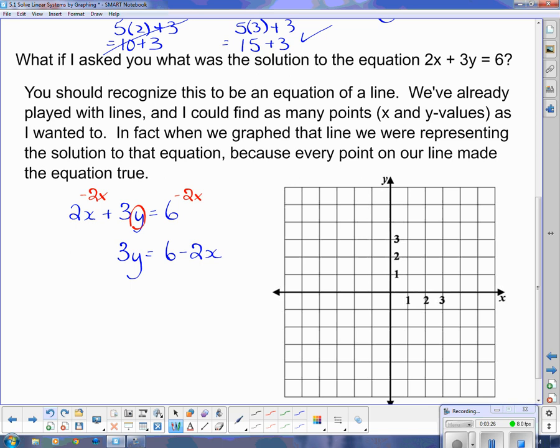So now what I have is 3y on this side equals 6 minus 2x. And now to get y by itself, y has a 3 attached to it, and that 3 is multiplying the y. And the way you get rid of something that's multiplying is you divide. So I divide that by 3, but if I divide that by 3, I've got to divide that side by 3 as well. When I divide this by 3, I just get y. When I divide this side by 3, I have to divide everything there by 3. So 6 divided by 3 is 2, and then 2 divided by 3, we're going to leave that as 2 thirds x.